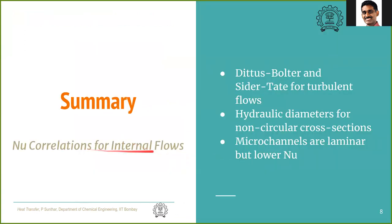To summarize: we saw two important Nusselt number correlations for turbulent flow — Dittus-Boelter for a smaller but simpler Prandtl number range, and Sieder-Tate for a larger Prandtl number range with a viscosity correction. We also defined the hydraulic diameter for non-circular cross-sections as 4 times flow area divided by wetted perimeter. For micro-channel flows, the flow is laminar but due to mean free path effects, the Nusselt number is always lower than the standard laminar value.